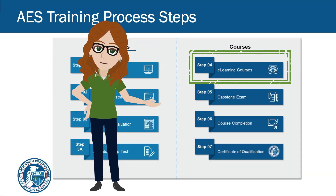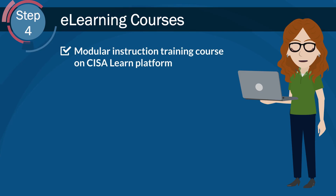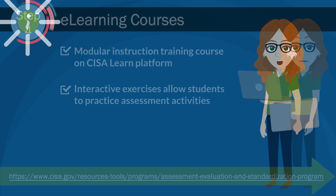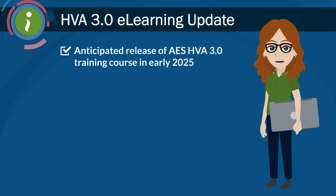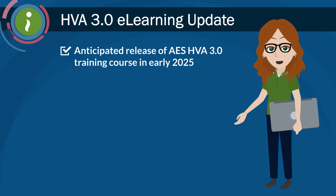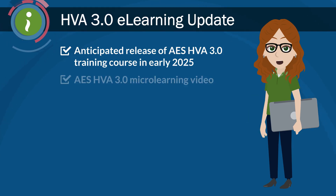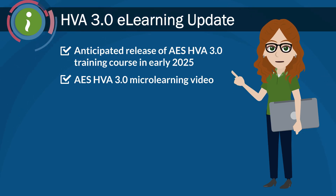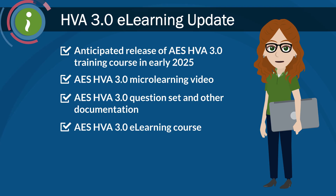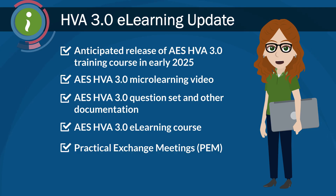Let's take a look at the required courses. Now that you've passed your CEE exam and OST for operator candidates, it's class time. Visit the AES webpage for detailed course and registration information. AES is anticipating the release of the AES HVA 3.0 eLearning course in early 2025. All AES students who have been deemed qualified in AES HVA 2.0 assessment methodology will have access to the AES HVA 3.0 microlearning video, which describes the differences between AES HVA 2.0 and AES HVA 3.0 question set and other documentation. The AES HVA 3.0 eLearning course is offered to all students who feel they need a refresher. Practical exchange meetings, or PEMs, will be scheduled to discuss any of your questions.